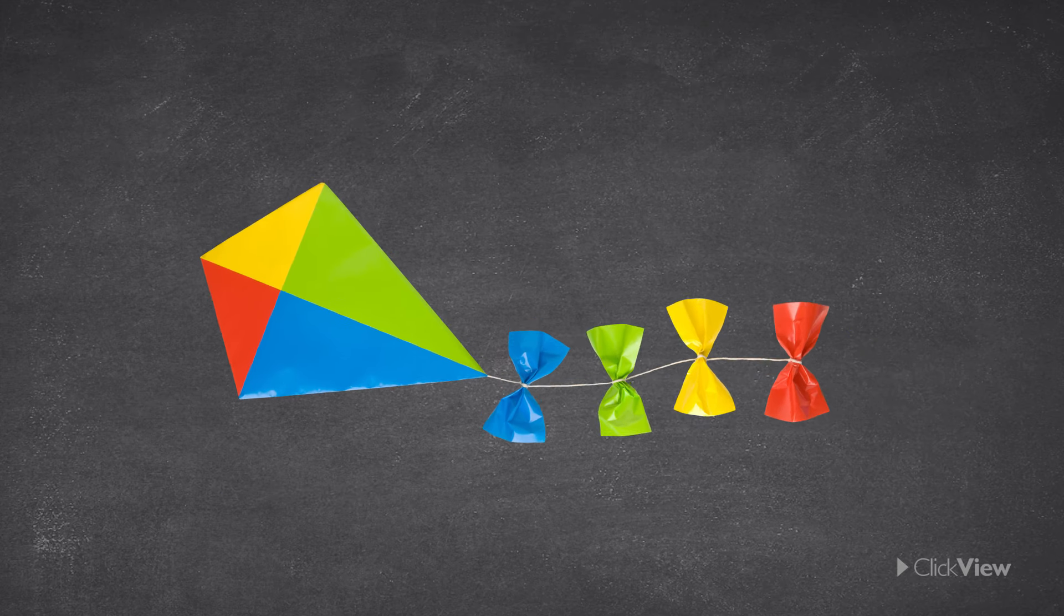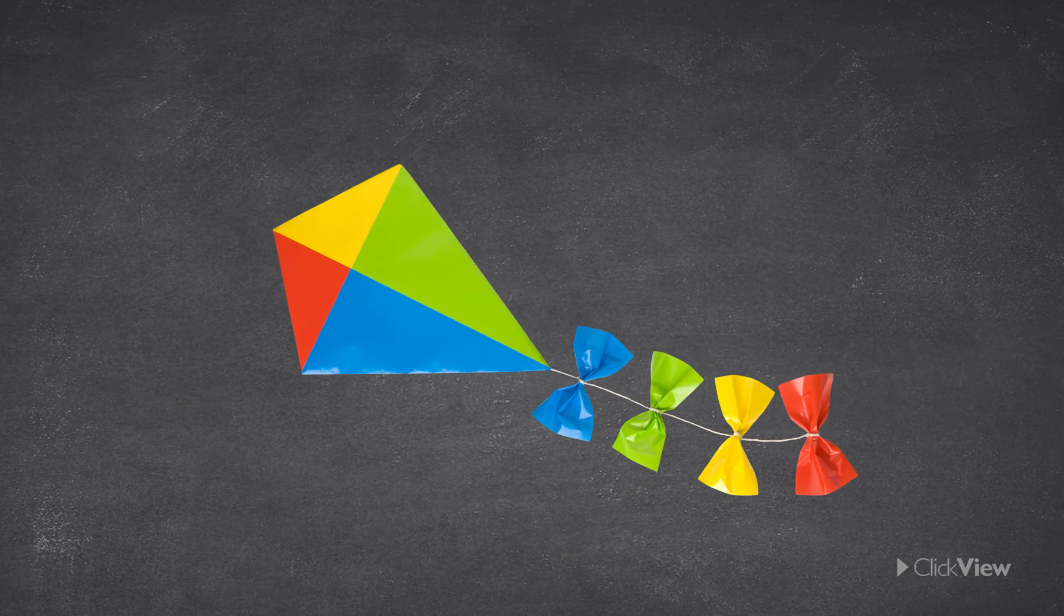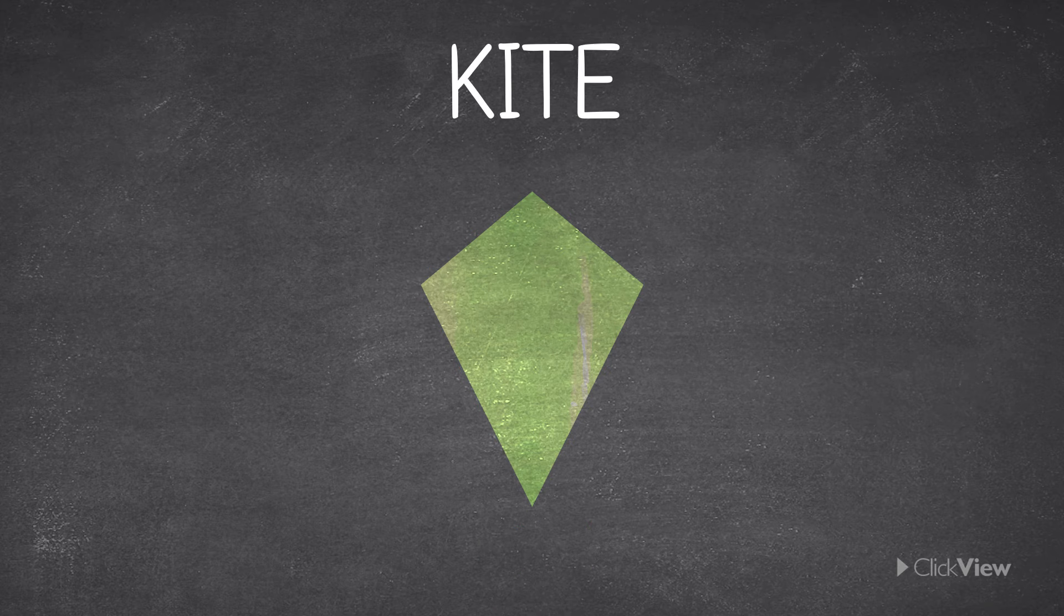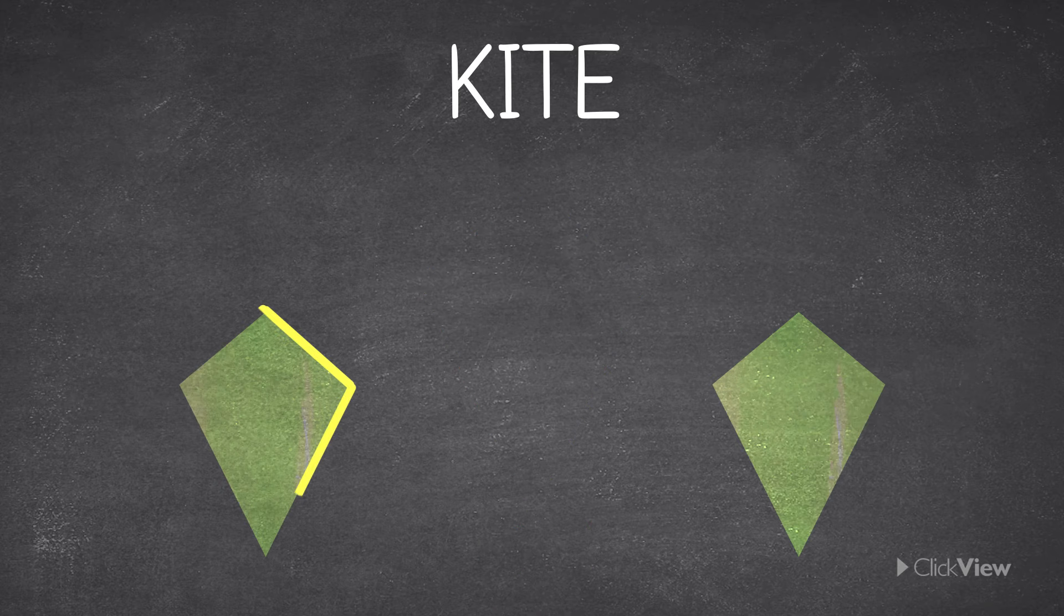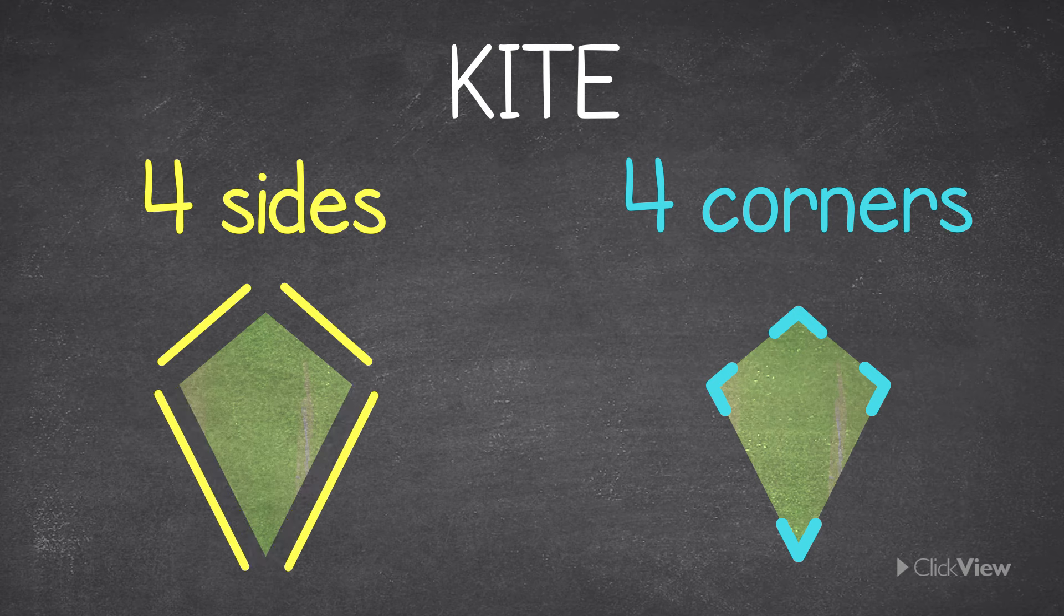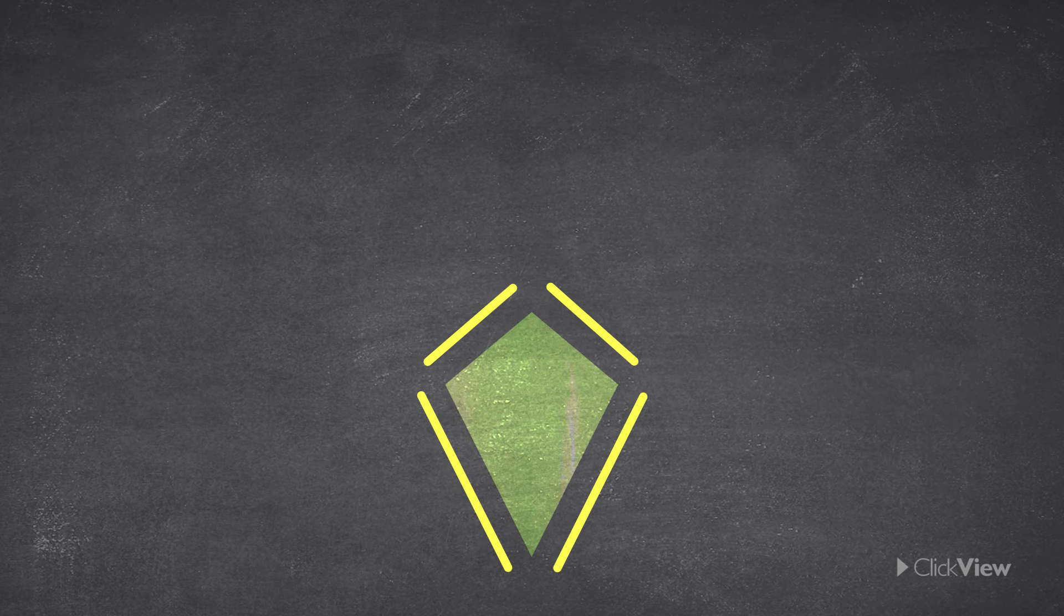If you've ever flown a kite before, this shape might look very familiar to you. The name of this shape is, you guessed it, a kite. It still has four sides and four corners and has two pairs of sides that are the same length. An interesting fact about kites is that they can never have parallel sides.